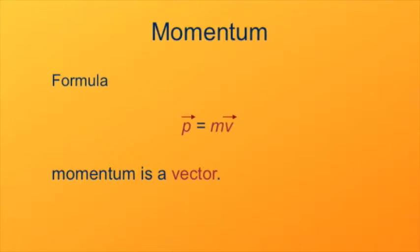This is a product of a vector with a scalar. The mass is a scalar. The momentum vector will be in the same direction as the velocity vector because mass is always positive.